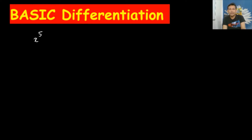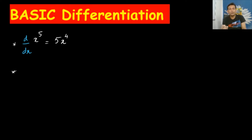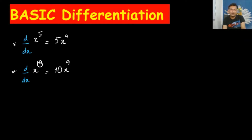I'm going to start with an example: x to the power 5, and I'm writing d/dx before that. The result is 5x to the power 4. One more example: x to the power 10 — d/dx of that — the result is 10x to the power 9. Are you observing something?